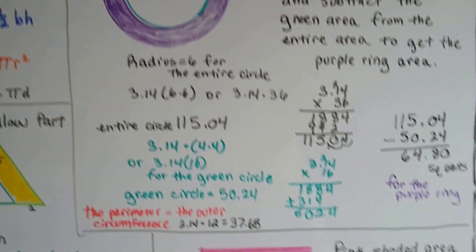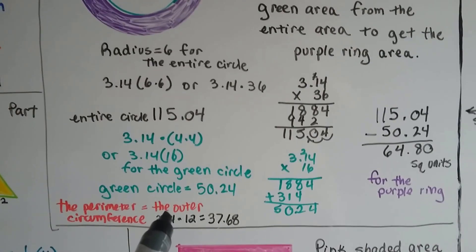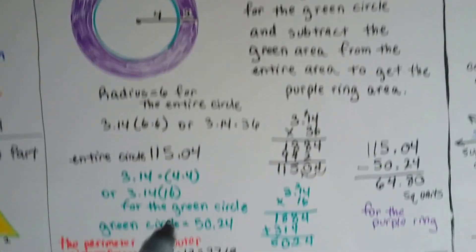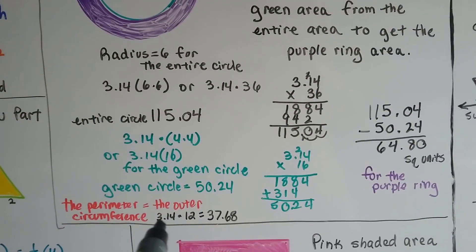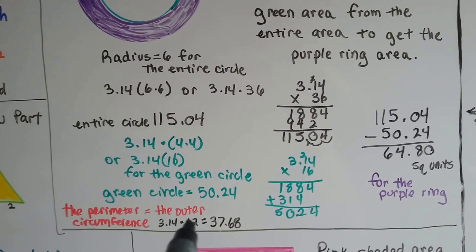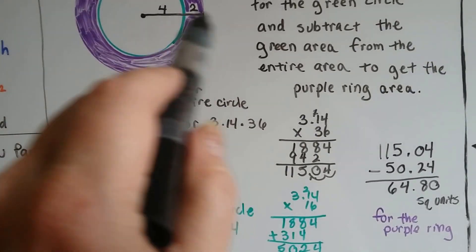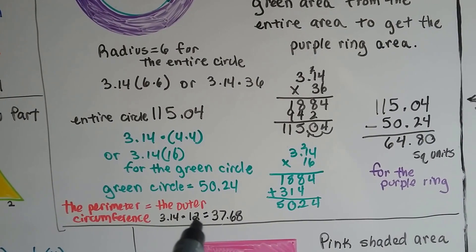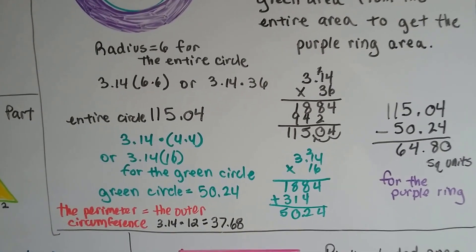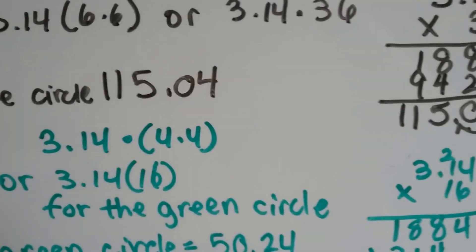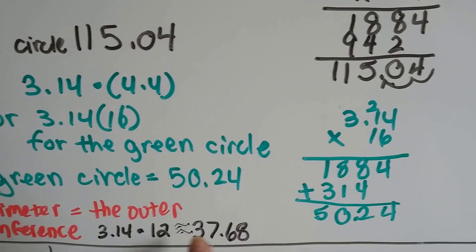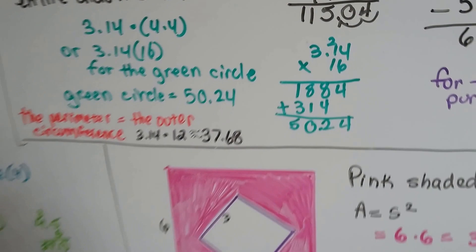We subtract the 50.24 from the 113.04, and we find out the green ring by itself is 64.80 square units. Just for the purple ring part. The perimeter would be the outer edge. It would be the circumference. And the circumference is pi times the diameter. So, if this is 6, then the diameter is 12. So, we do 3.14 times 12, and we get 37.68. And, in fact, this should say approximate, shouldn't it? We should be using that approximate symbol here, the two wavy lines.